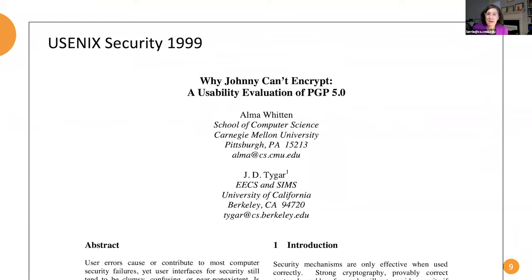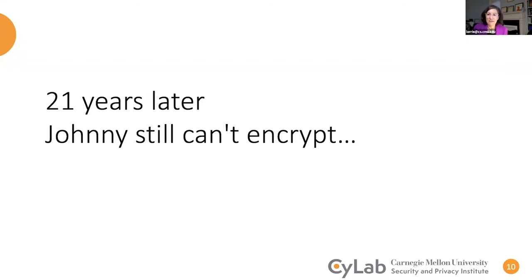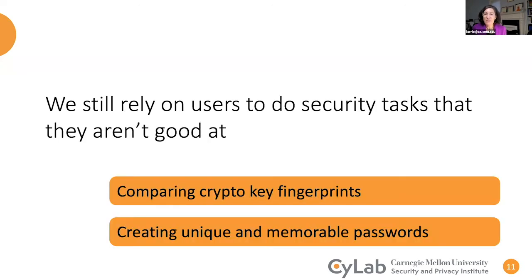If we look back to 1999, there was a wonderful paper called 'Why Johnny Can't Encrypt,' which has inspired a lot of the research we have today on usable privacy and security. That paper presented the problem of users not being able to use email encryption tools. When we check in again 21 years later, we find that Johnny still can't encrypt — things aren't really all that much better. Part of the reason is that we still rely on users to do security tasks they really aren't very good at.